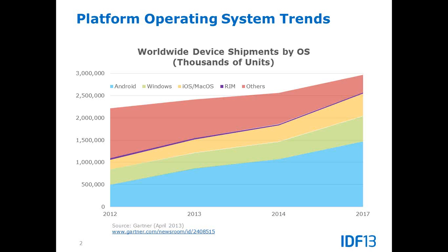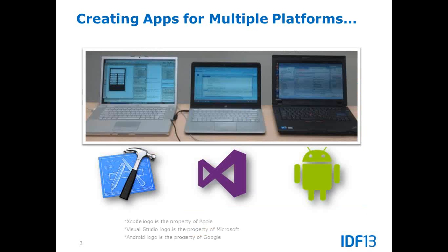This graph shows a study done by Gartner on worldwide device shipment by OS. In this graph you can see that Android is the predominant OS in the device market, followed by Windows and then iOS. The reason Android is taking up market share is because most of the tablets and smartphones in the industry are using Android OS.